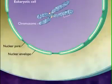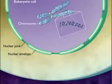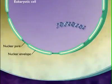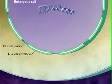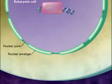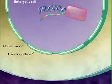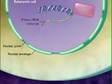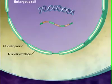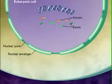Because eukaryotic cells possess a nucleus, their mRNA must be completely formed and must pass across the nuclear envelope before translation. Eukaryotic mRNAs are modified before they are translated: introns are removed and the remaining exons are spliced together.